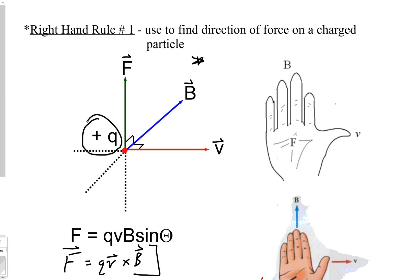The right hand rule as shown only works for positively charged particles — notice the positive sign. If an electron goes into a magnetic field, you simply reverse the direction of the force. So for now it's easier to talk about nothing but positive particles, and once you've got that down, just flip your answer if it's a negative charge particle.